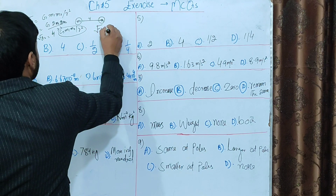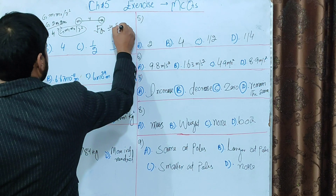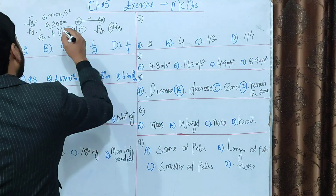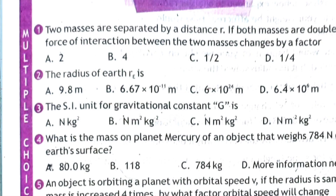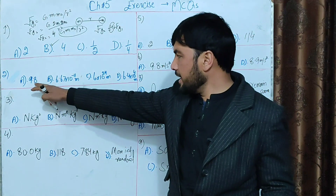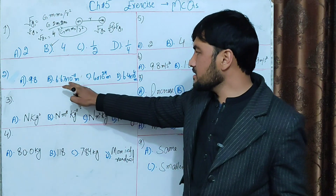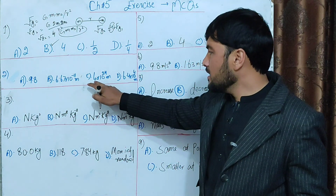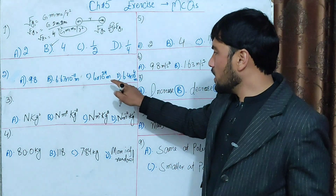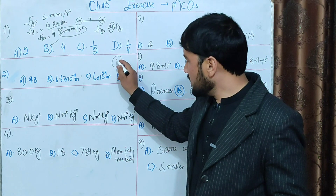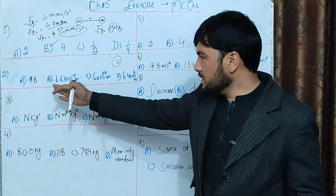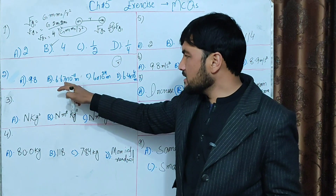So FG1 and FG2 follow this equation. Now for the MCQ: the options are — option A: 9.8, option B: 6.67 × 10⁻¹¹ meters, option C: 6 × 10²⁴ meters, option D: 6.4 × 10⁶ meters. What is the radius of the Earth?